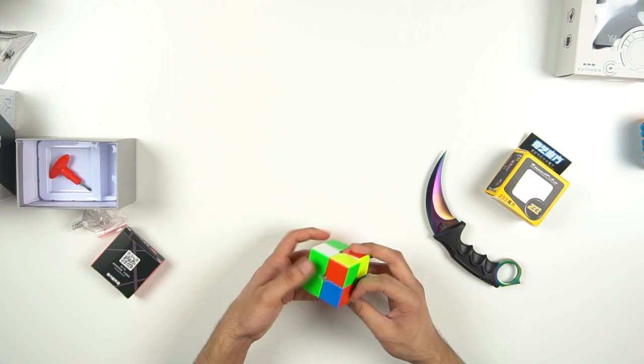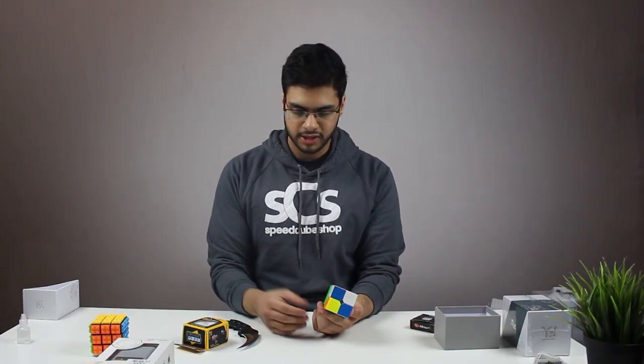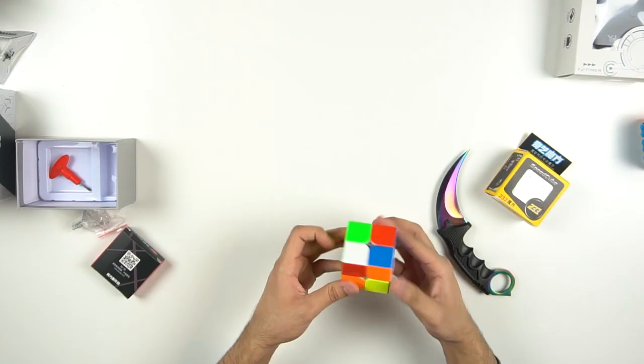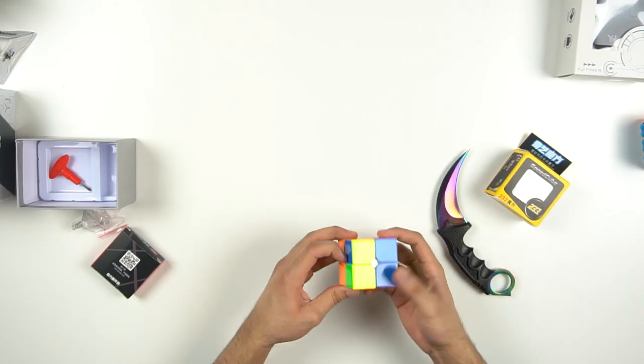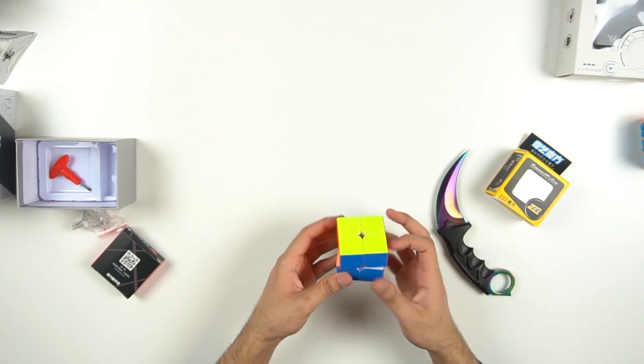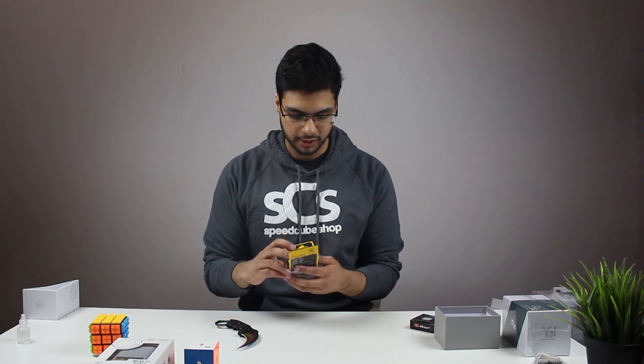Let's do a quick solve. I actually really like the turning on this, it's quite fluid, it's not locking up or anything. Now that I'm thinking about it, maybe I should have opened the YJ timer first so I should time all of these solves. But oh well. Whoa. Cool. Not a very good solve, but we will actually do some solves on this after we unbox the YJ timer.